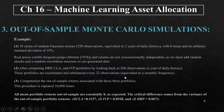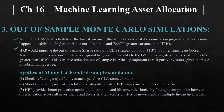As expected, all mean portfolio returns out of sample are essentially zero. The critical difference comes from the variance of out-of-sample portfolio returns. Although CLA's goal is to deliver the lowest variance, its performance happens to exhibit the highest variance out of sample, greater variance than HRP's. As a synthesis for the Monte Carlo out-of-sample simulation: shocks affecting a specific investment penalize CLA's concentration, while shocks involving several correlated investments penalize IVP's ignorance of the correlation structure. HRP provides better protection against both common and idiosyncratic shocks by finding a compromise between diversification across all investments and diversification across clusters of investments at multiple hierarchical levels.